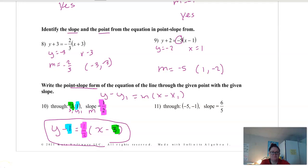Okay, last one. Maybe try this one on your own before you check the answer. So hit pause really quick. Try number 11. Okay, now let's see if you got it right. x₁ y₁ m. So it's going to be y subtract negative 1. So I'm just going to put plus 1 because there's no point in putting minus a negative. Equals 6 over 5 times x subtract negative 5 is the same thing as plus 5. And that is it.